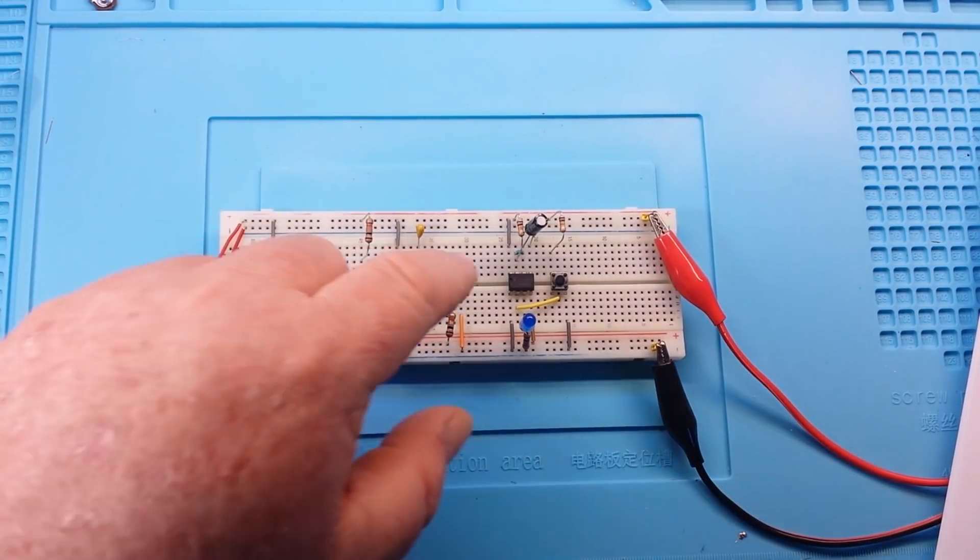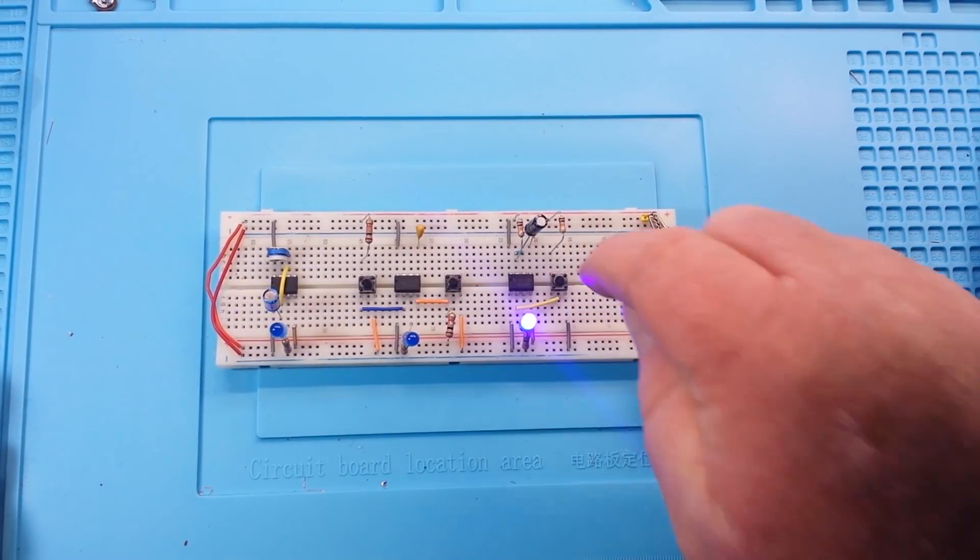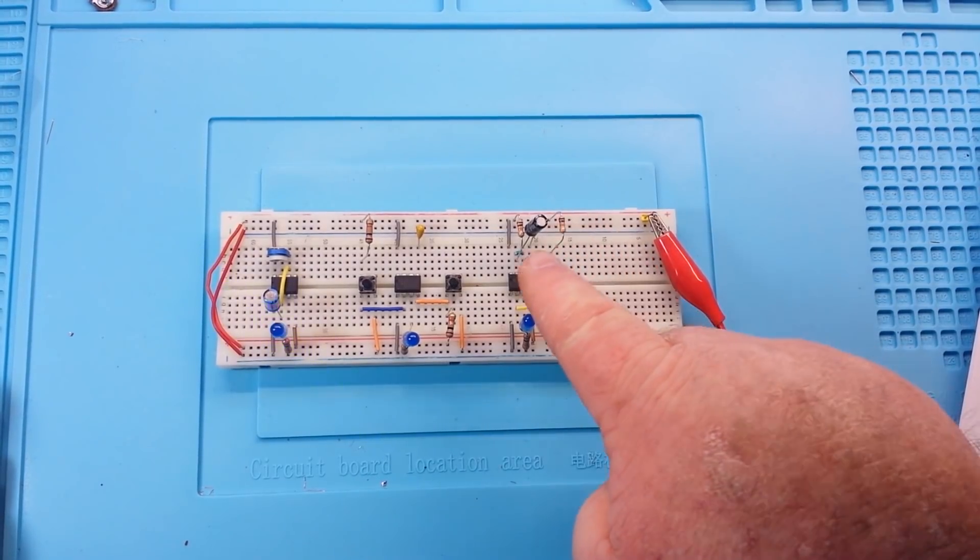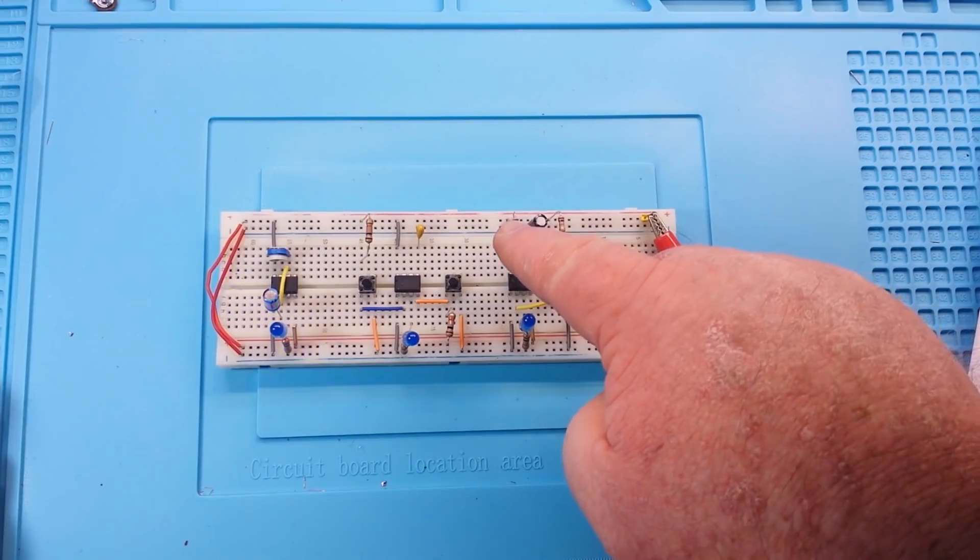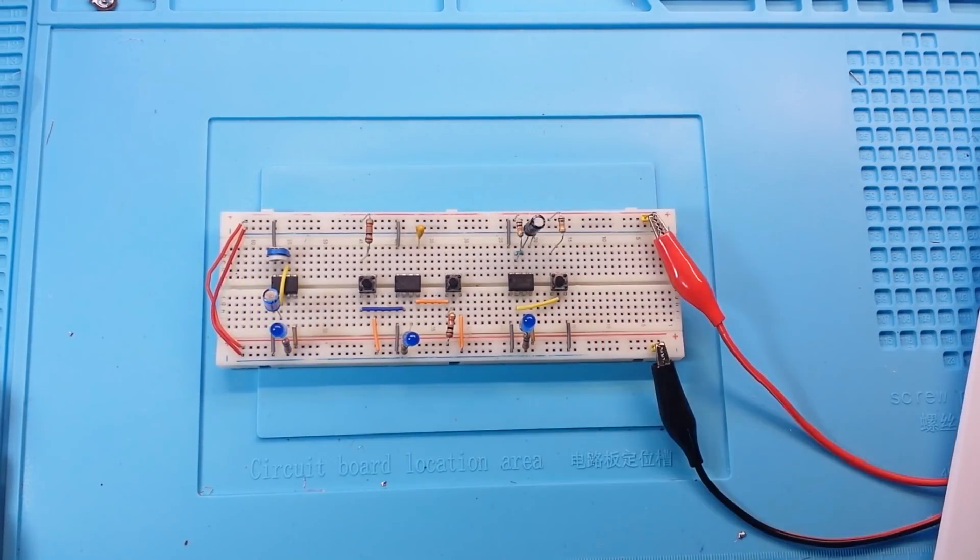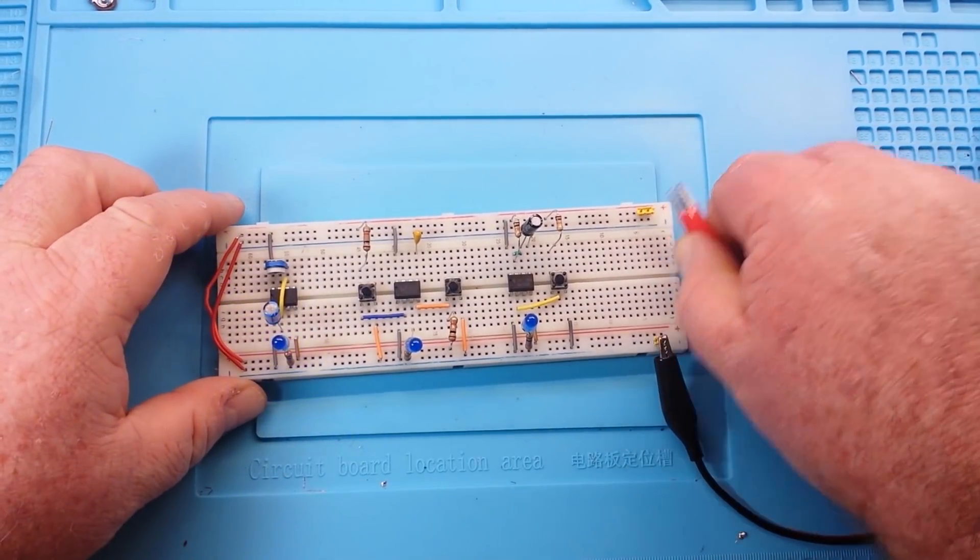And then finally we have the mono-stable mode. We ground the trigger, and it comes on for a period of time, which is controlled by the two resistors—I mean, actually in this case it's controlled by this resistor here and this capacitor here. So, how can one chip do so many things? Well, that's what we're here to talk about. So let me get this out of the way.